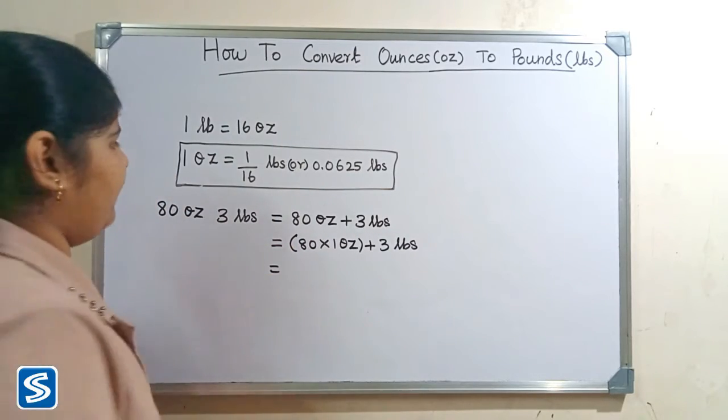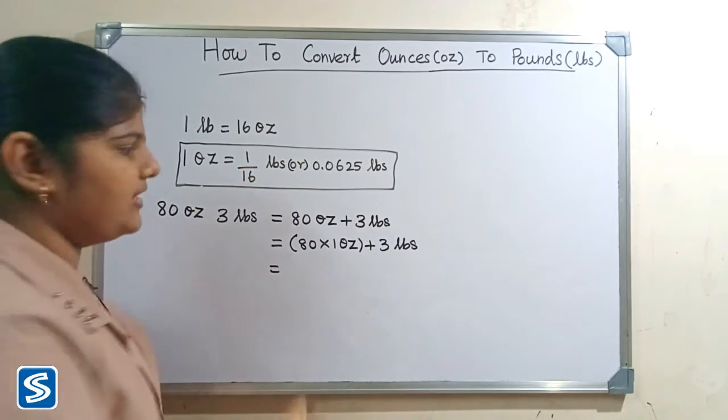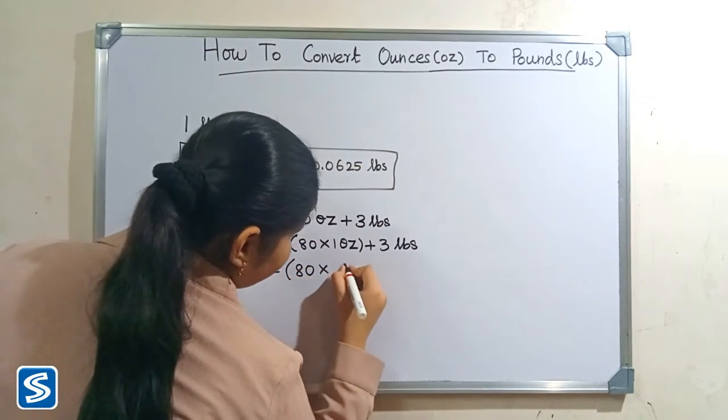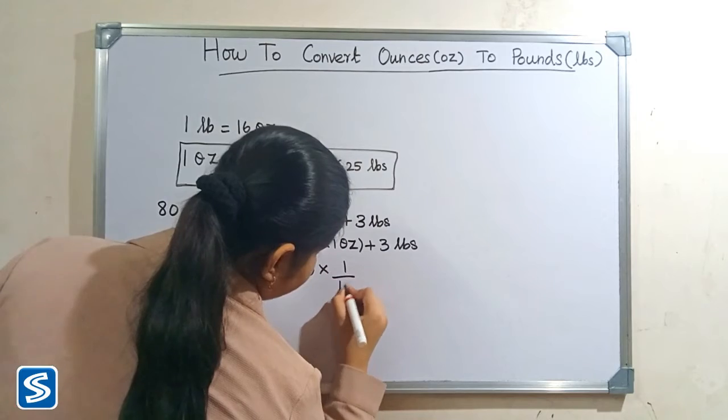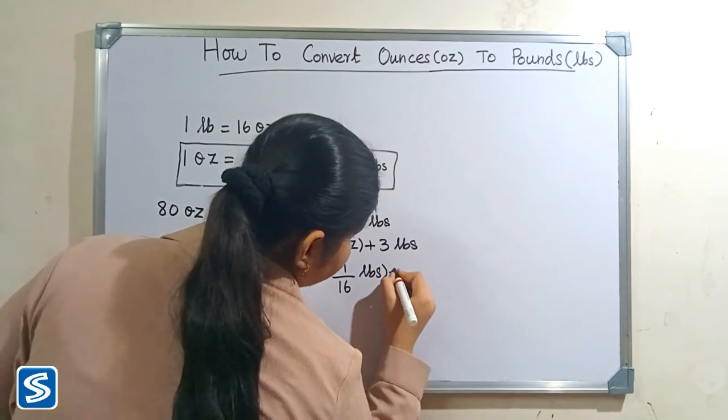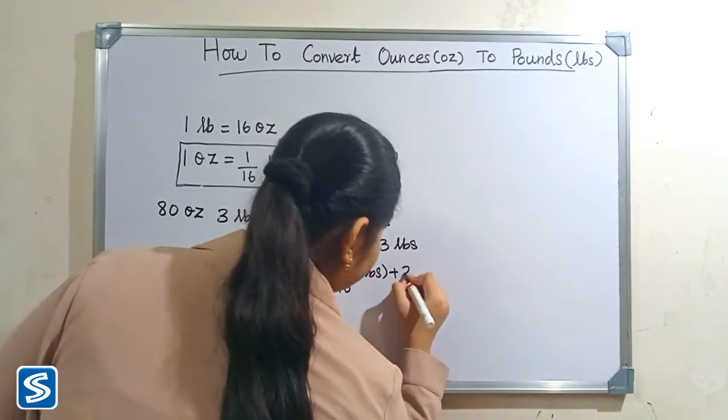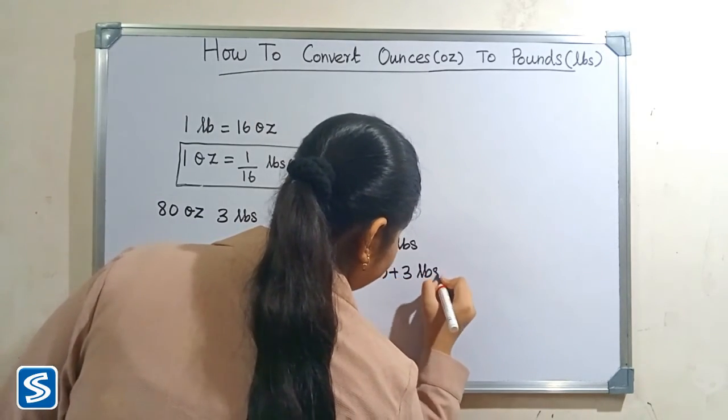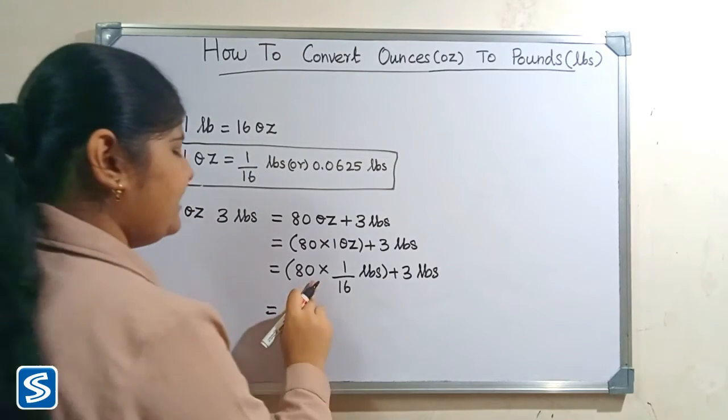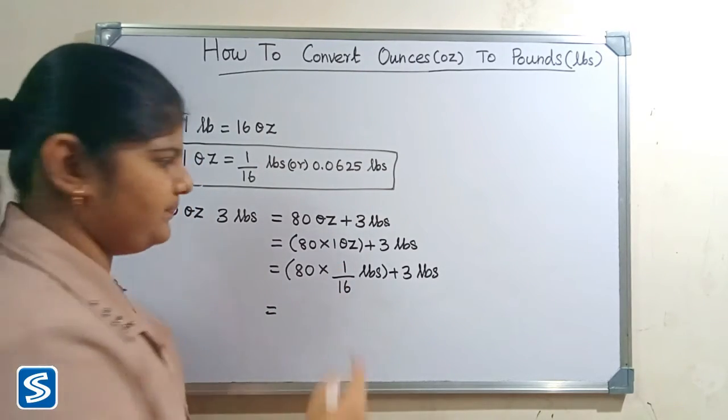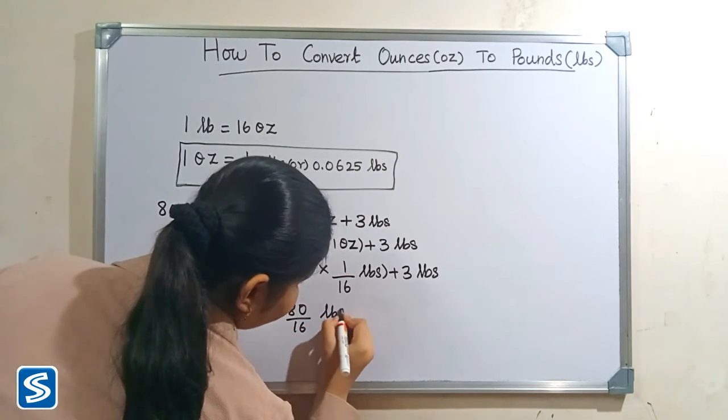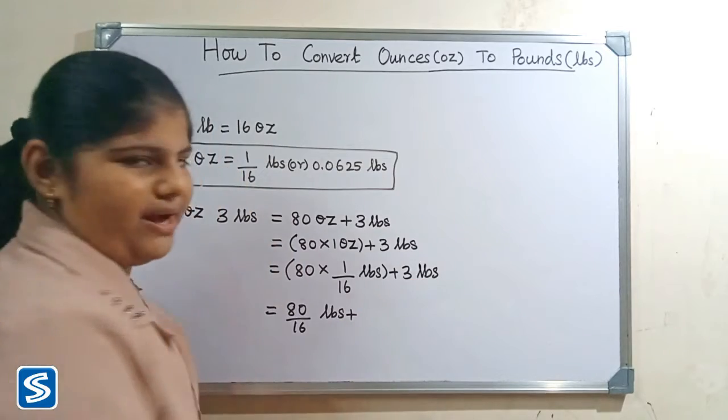Now we have to substitute 1/16 pounds in the place of 1 ounce. So, 80 × 1/16 pounds plus 3 pounds. 80 × 1 will be 80, so 80 ÷ 16 pounds plus 3 pounds.